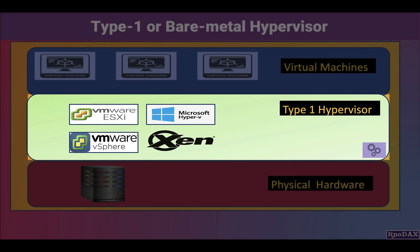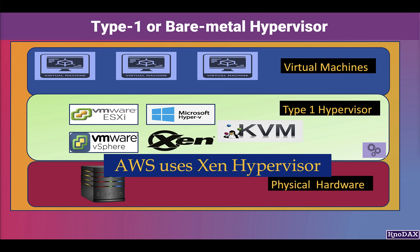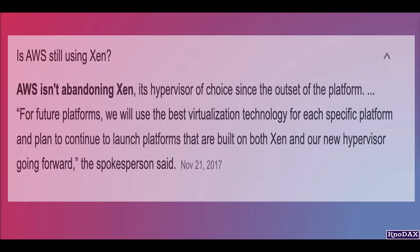Xen Hypervisor is the open source standard for hardware virtualization. KVM Hypervisor, which is a kernel-based virtual machine, is also open source virtualization technology. KVM is a virtualization module in the Linux kernel — it allows the Linux kernel to function as a hypervisor so you can run multiple VMs. Essentially, the KVM module converts Linux OS into a type 1 or bare metal hypervisor. Amazon Web Services uses Xen Hypervisor, but in 2019 announced the use of KVM.